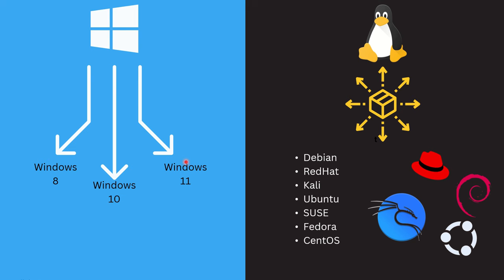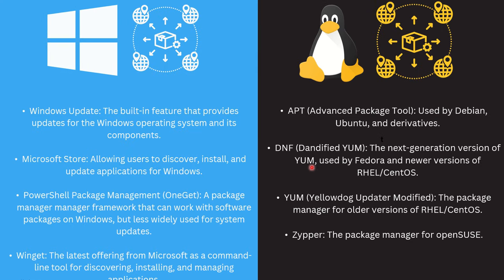In the Linux world, there is the main Linux kernel, built around 1991 by Linus Torvalds, and based on that kernel, various distributions have emerged. These distributions are maintained either by open-source communities or by companies. Red Hat is an example of a commercial distribution, while Kali, Debian, and Ubuntu are mostly maintained by open-source communities. Each distribution has its own update mechanism, which we'll now explore.